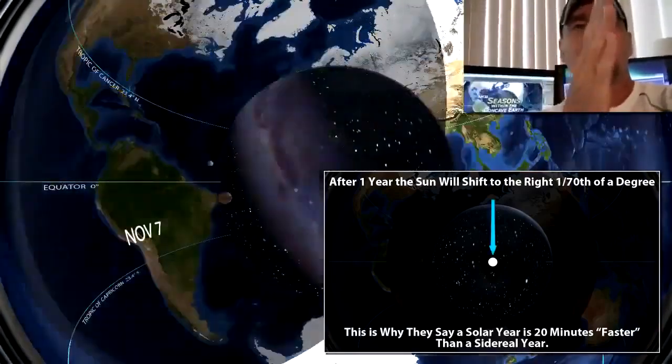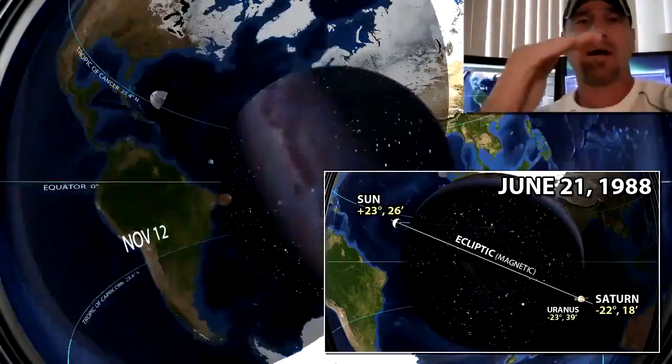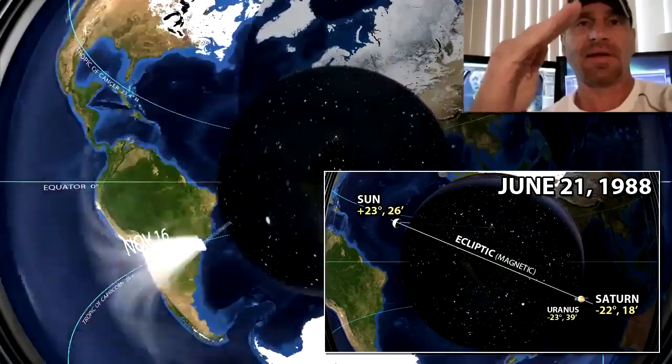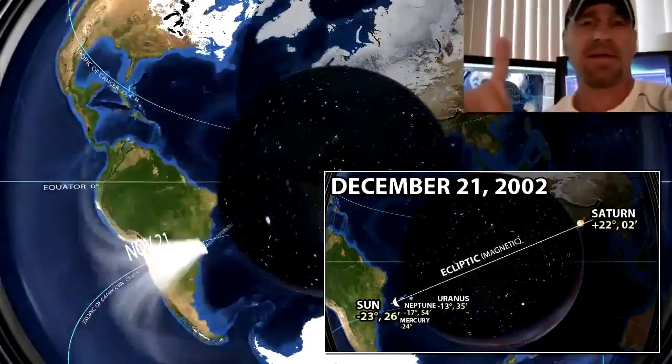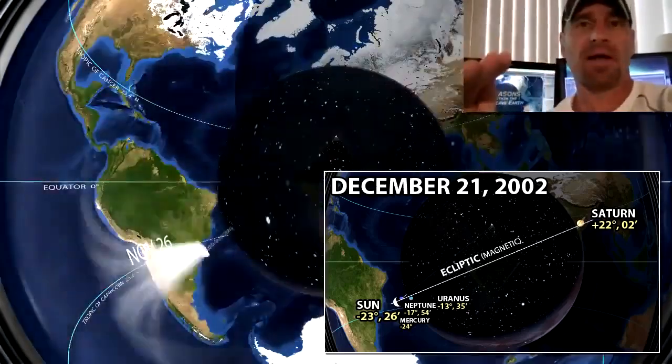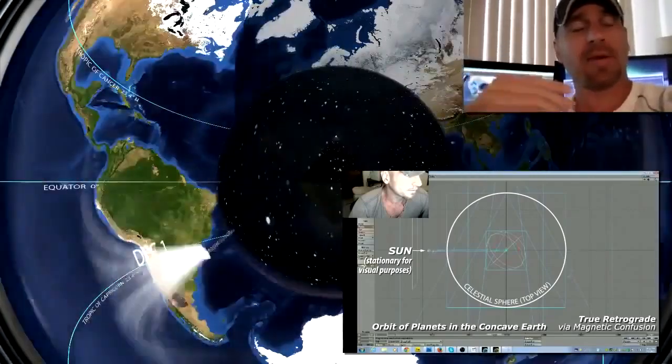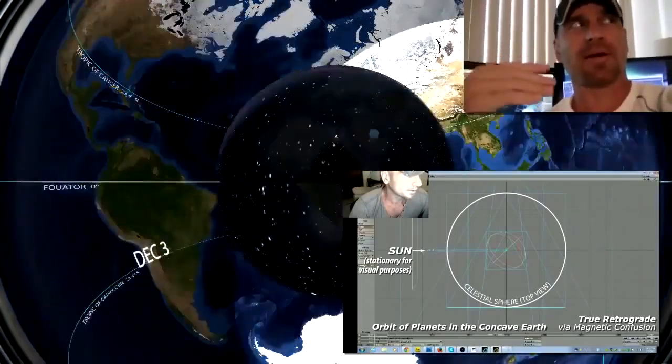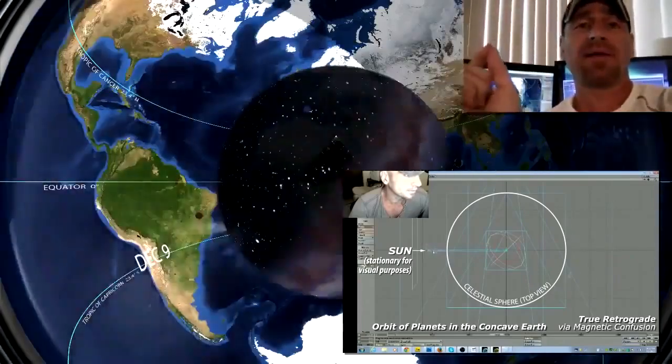The planets are all magnetically affected by the Sun, so when the Sun is inclined like that, the ecliptic of the planets—that magnetic ecliptic imaginary path—is going to be influenced by it as well. There's a real retrograde motion to the planets; it's not just an apparent retrograde motion caused by a supposed spinning Earth.